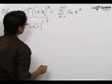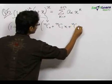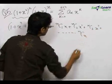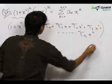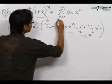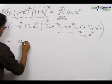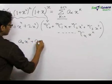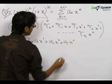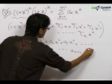We substitute this expansion and get: (1 + x⁴ + 2x²) times (nc0 + nc1·x + nc2·x² + nc3·x³ + ... + ncn·x^n), which equals a0 + a1·x + a2·x² + a3·x³ + ... + a(n+4)·x^(n+4) on the right-hand side.